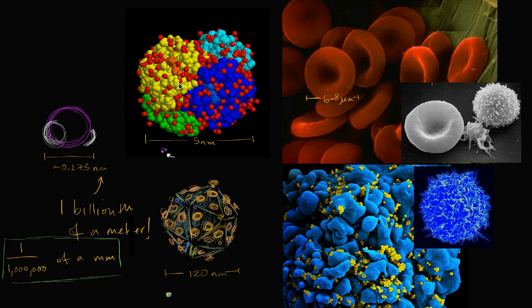We've talked a lot about protein structure, how proteins can take on all these interesting shapes and do fairly surprising and complex things inside of biological systems. Now let's go the next scale up — to a virus. What I've attempted to draw here is a fairly well-known virus, HIV, and it's actually one of the larger viruses. Its diameter is roughly 120 nanometers. If we were to draw the hemoglobin protein at the same scale as the virus, that little thing would be the hemoglobin protein, and we wouldn't even be able to see the water molecule at this scale. But this is still 120 billionths of a meter — still unimaginably small.